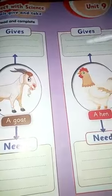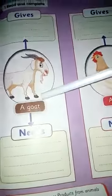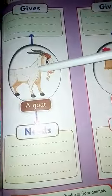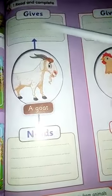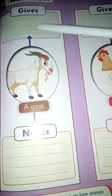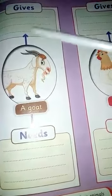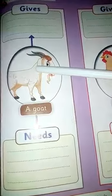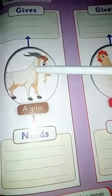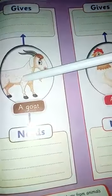In your box here we have 'give and need'. If you look at this picture, here we have a goat. A goat — what does it give? Excellent! It gives us meat. What else can we get from it?